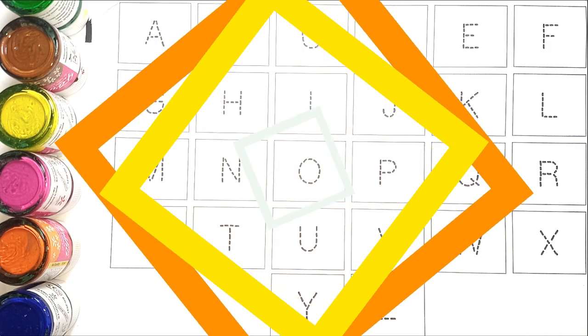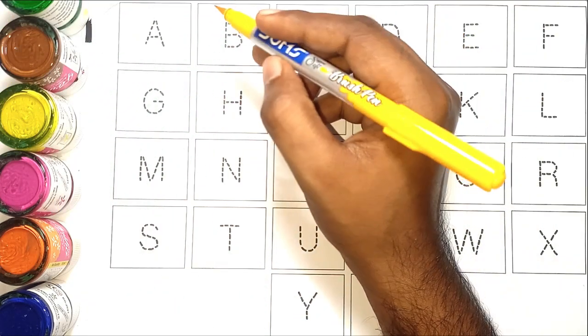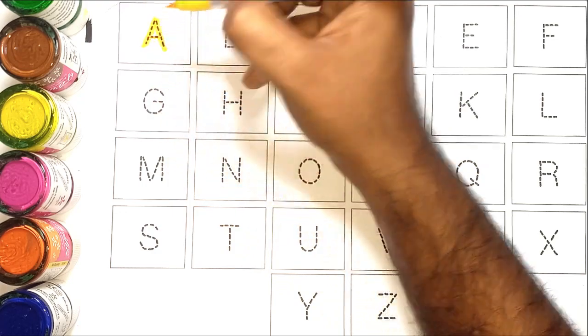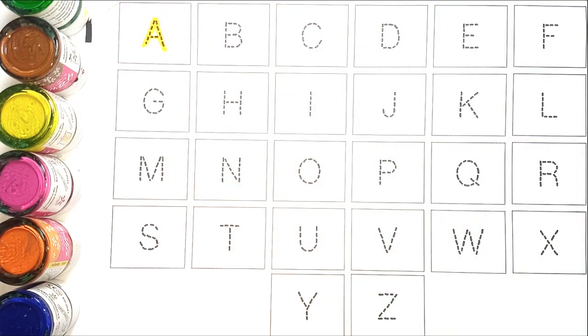Hello kids, today we will learn alphabet ABC. Let's start the video. Yellow color A, A for apple.